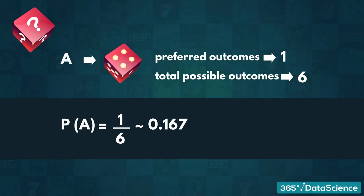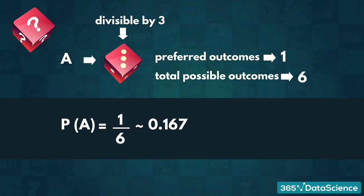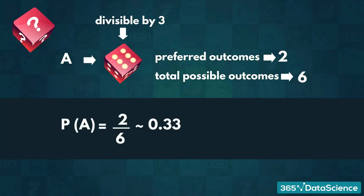Events can be simple or a bit more complex. For example, what if we wanted to roll a number divisible by 3? That means we need to get either a 3 or a 6. So, the number of preferred outcomes becomes 2. However, the total number of possible outcomes stays the same, since the die still has 6 sides. Therefore, we conclude that the probability of rolling a number divisible by 3 equals 2/6, which is approximately 0.33.